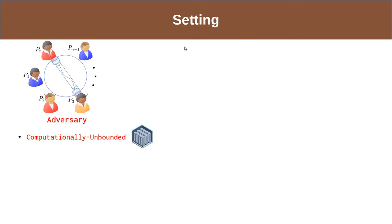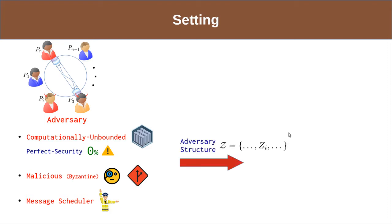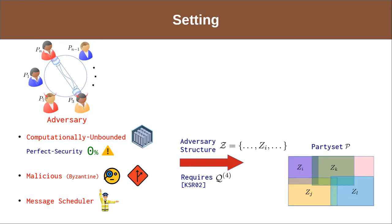The adversary is computationally unbounded and has infinite computing power. We consider the setting of perfect security, which guarantees zero probability of error. The adversary is malicious, meaning it may deviate from the protocol instructions in any arbitrary manner. We consider the asynchronous communication model, and as a result, the adversary has the power to schedule the messages in the network. The adversary's corruption capability is specified by an adversary structure. For the existence of secure MPC in this setting, the Q4 condition needs to be satisfied — the set of all parties should not be covered by any four potentially corruptible sets.